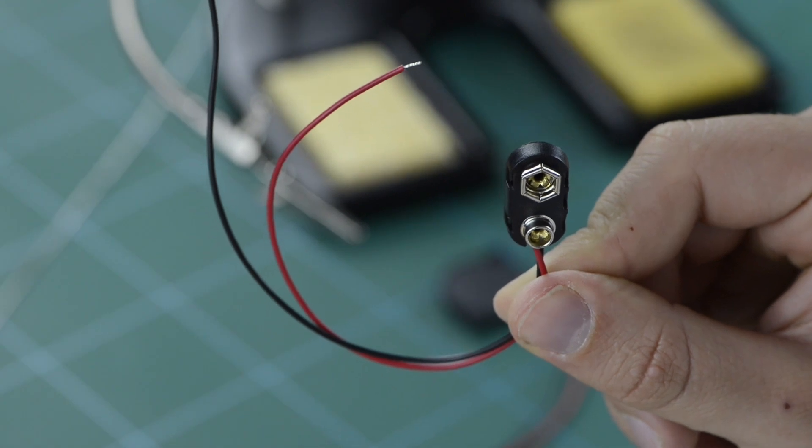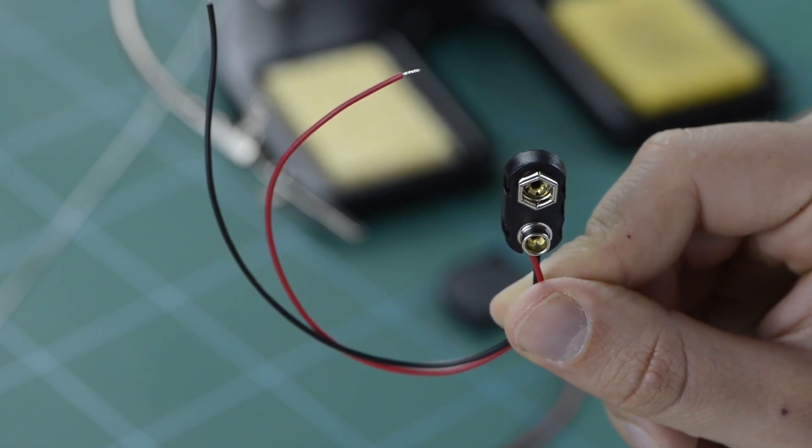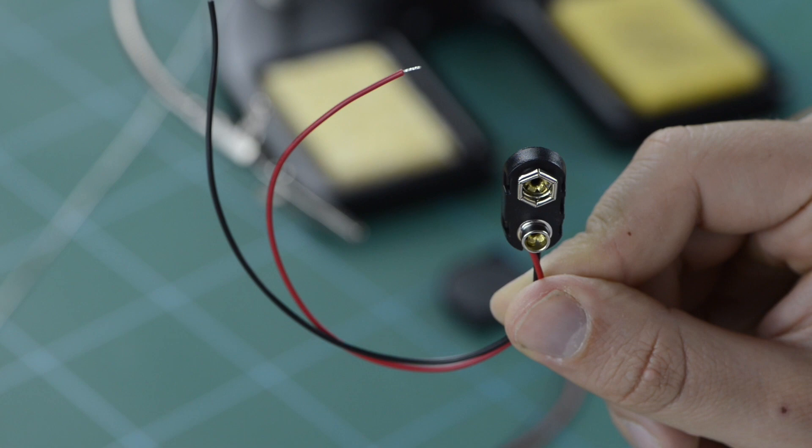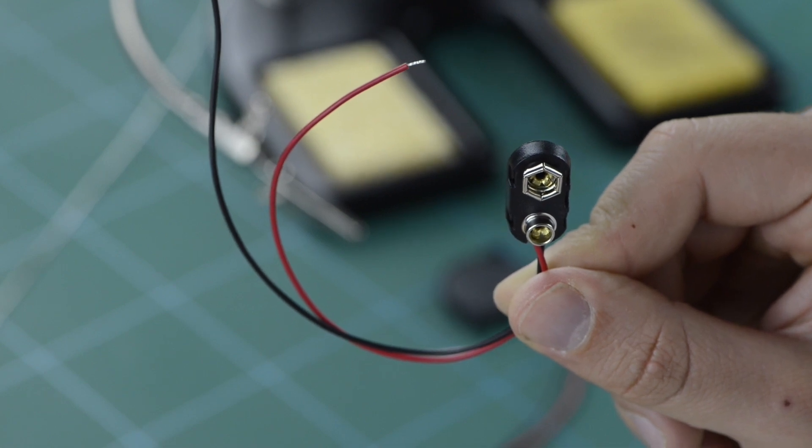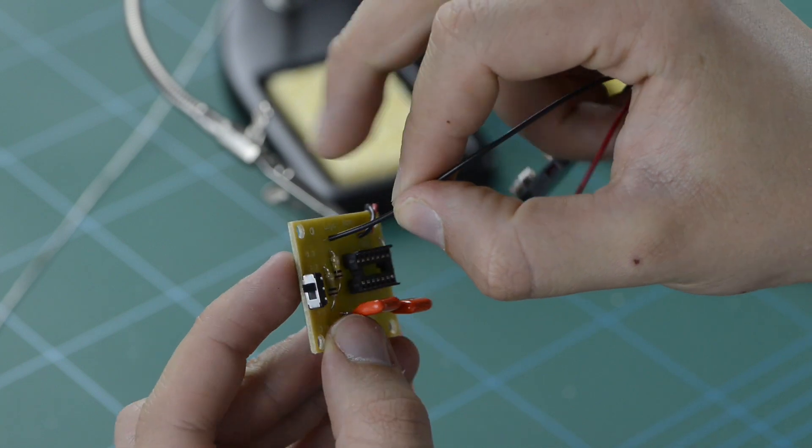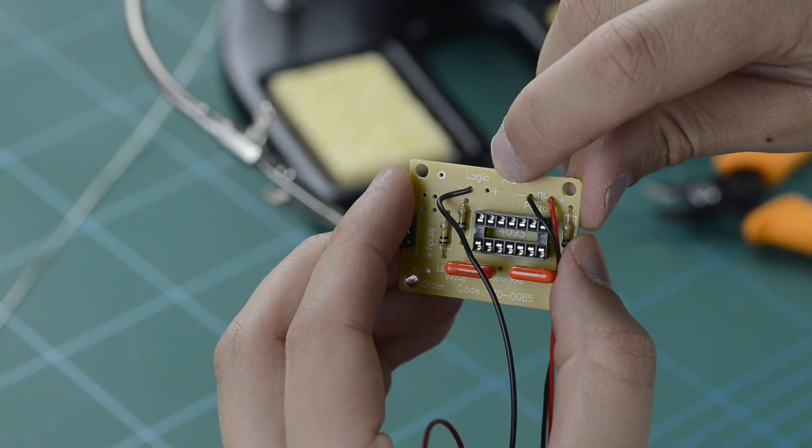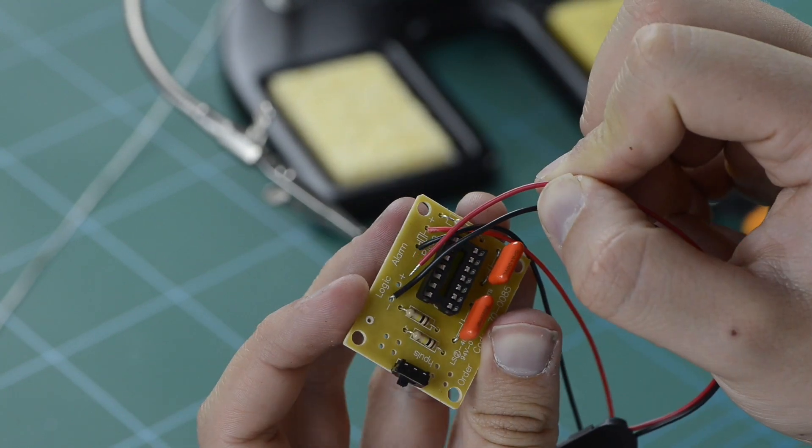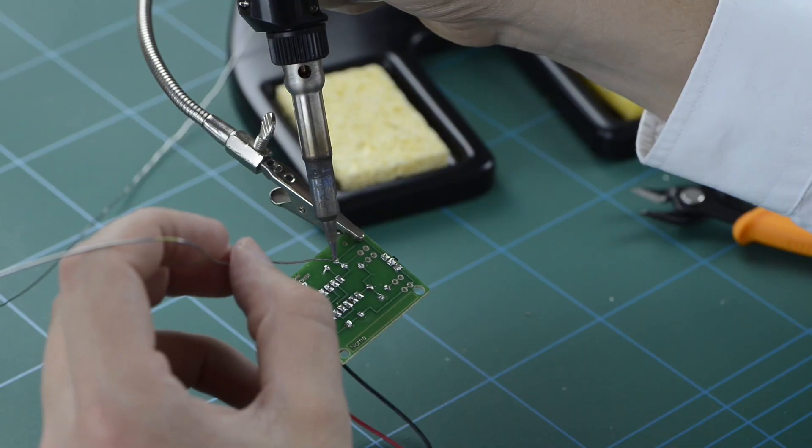Up next is the PCB battery clip. Again, the wires on this component have already been tinned, so you don't need to go through the tinning process for this unit. Place the wires through the holes denoted for the battery clip on the PCB, again ensuring that the red wire goes through the hole with the positive symbol next to it and solder into place.